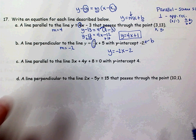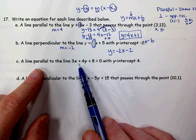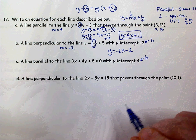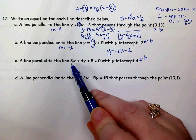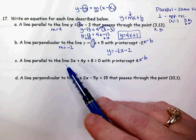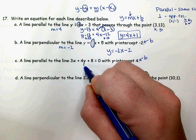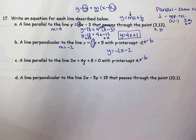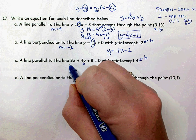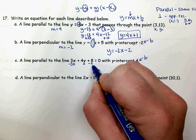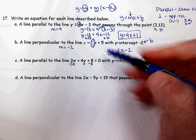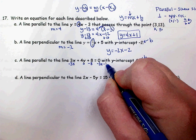On part C, we want a line parallel to this line and it's giving us the y-intercept, so we know b, but we need the slope. The slope is not 3 — it's not the number in front of x unless your equation is in slope-intercept form, which ours is not. So we need to get y by itself. I'm going to subtract the 3x and subtract the 8 from both sides of the equation.